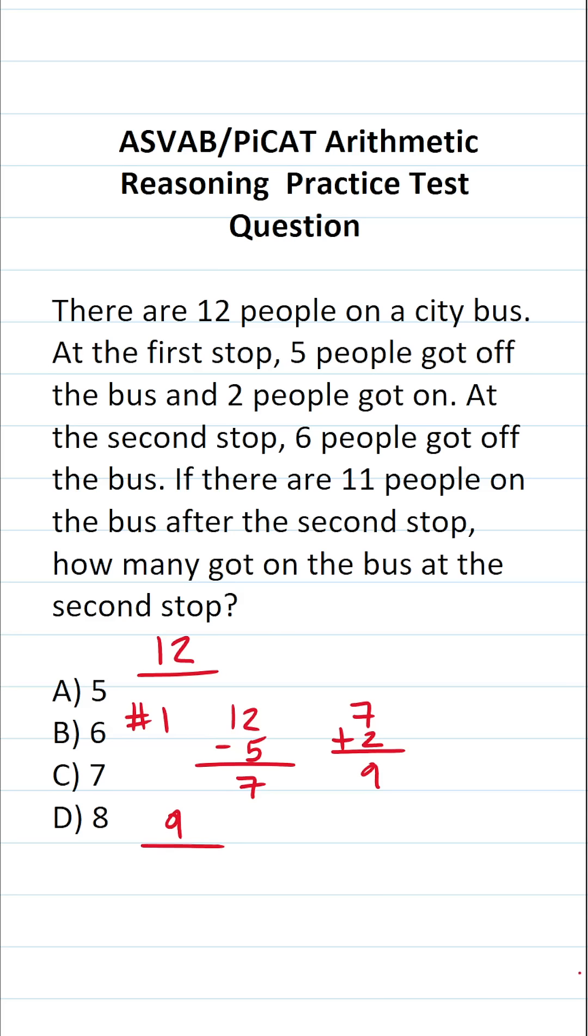So as we head toward the second stop, we know we have nine people on the bus. At the second stop, six people got off the bus. So we went from nine people being on the bus and six people got off. That means there are three people on the bus.